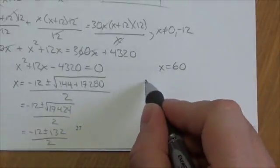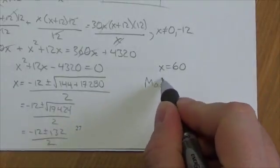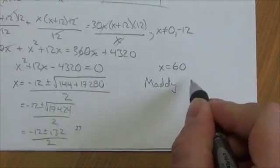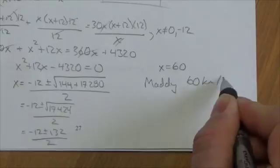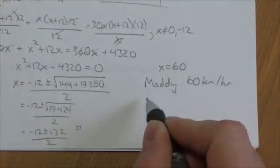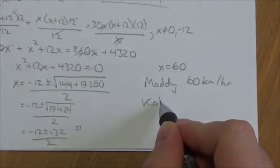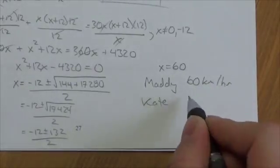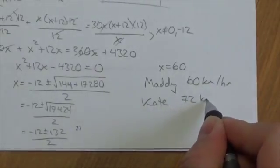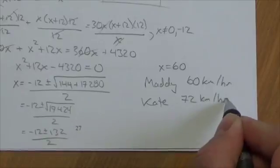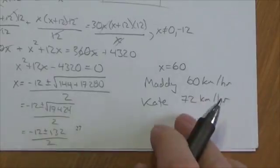So x equals 60, meaning Maddie is going 60 kilometers per hour. Kate, being 12 km/h faster, is going 72 kilometers per hour.